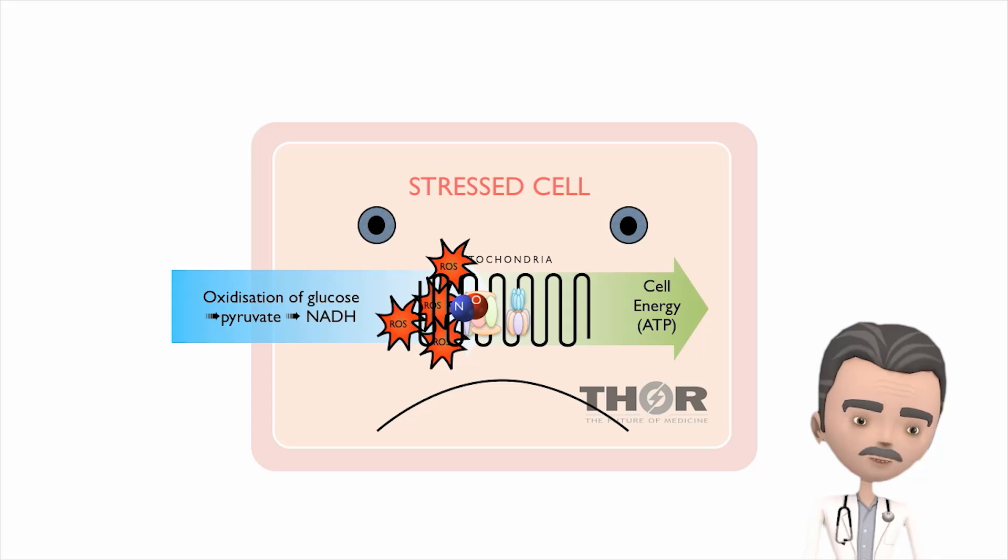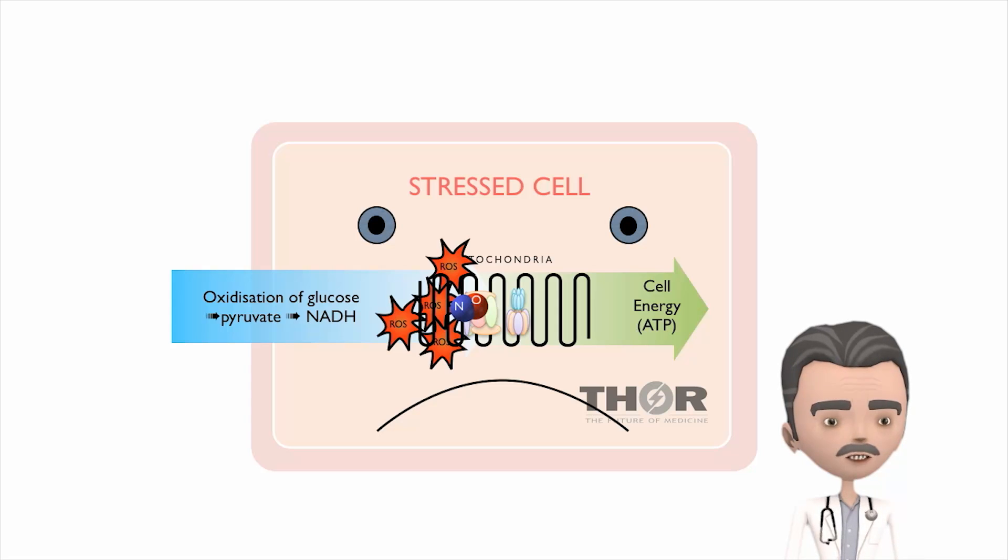This stops the production of ATP and increases oxidative stress. Oxidative stress leads to inflammation and cell death via the gene transcription factor NF-kappa B, known as the master switch for inflammation.